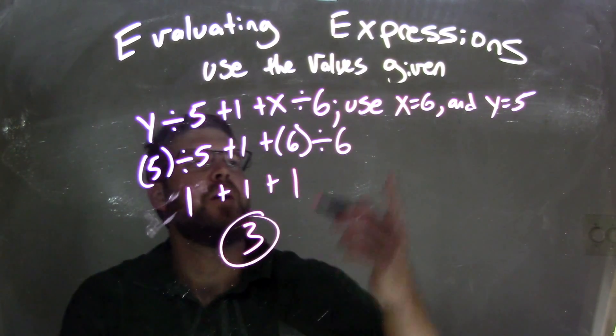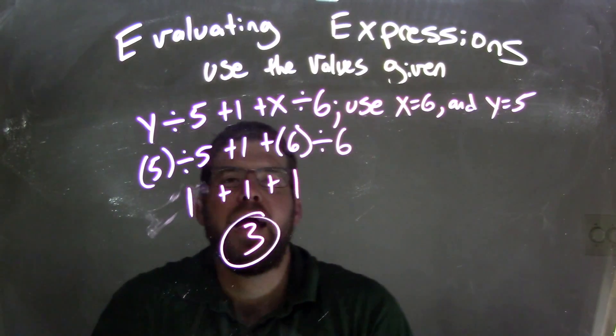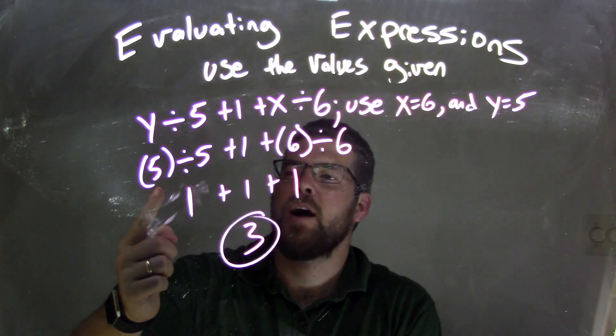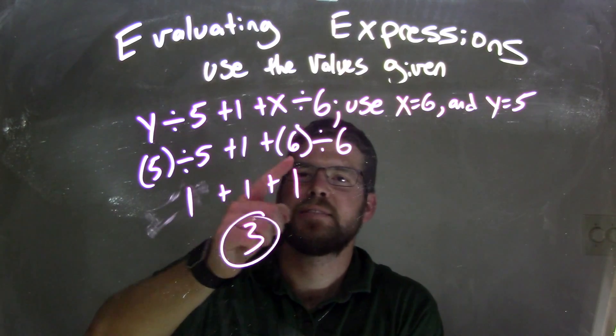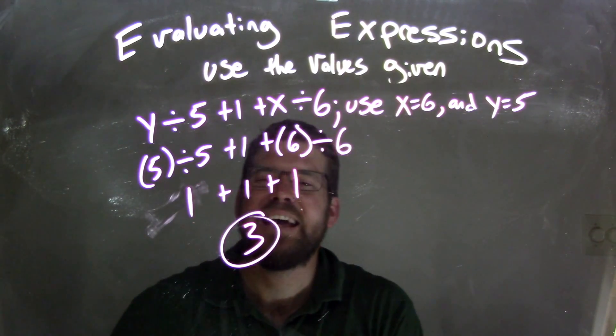So again, let's recap. We took 6 and 5, substituted them in for x and y, and then we saw that y was 5 here, so 5 divided by 5 is 1. 6 divided by 6 was 1 as well, and 1 plus 1 plus 1, bringing that 1 down, is 3.